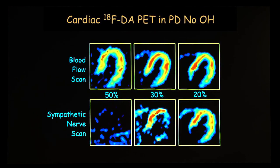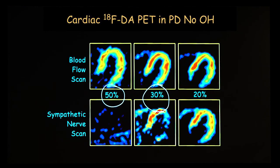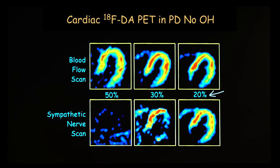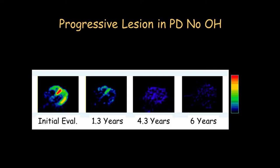What about people with Parkinson's who don't have orthostatic hypotension? You can get evolution there as well. About half of people with Parkinson's without orthostatic hypotension already have a loss of sympathetic nerves in the heart, and a substantial minority have a partial loss. In young patients with Parkinson's, they can have normal innervation. This illustrates the progressive loss of innervation over time.